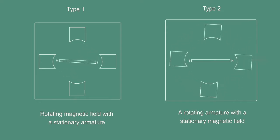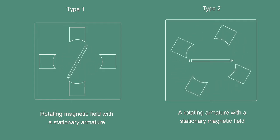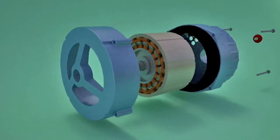Field with a stationary armature. Type 2, a rotating armature with a stationary magnetic field. Most alternators use a rotating magnetic field with a stationary armature. Main parts of the alternator are: